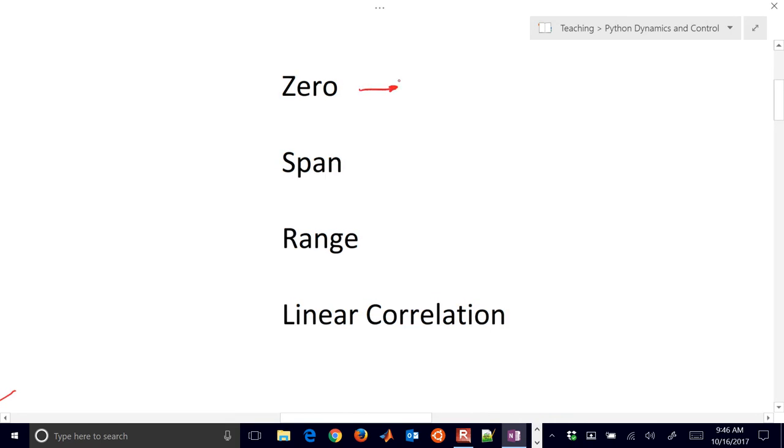We're going to have the zero, so this is going to be the lower limit of what it can sense. That's going to be our zero value. Then the span is going to be the upper to lower limit of the sensor. And then the range is going to be the delta. So upper and lower limit.